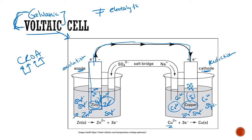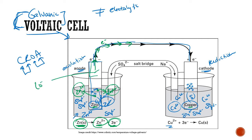Because zinc is more reactive than copper, zinc is more likely to give away its electrons. We're going to take those solid pieces of zinc metal and turn them into zinc ions. When zinc is oxidized — losing those electrons — the electrons are transported through the wire. When a zinc atom gives away those electrons, it turns into a zinc ion, which is soluble in water, so we get more zinc ions in the solution.